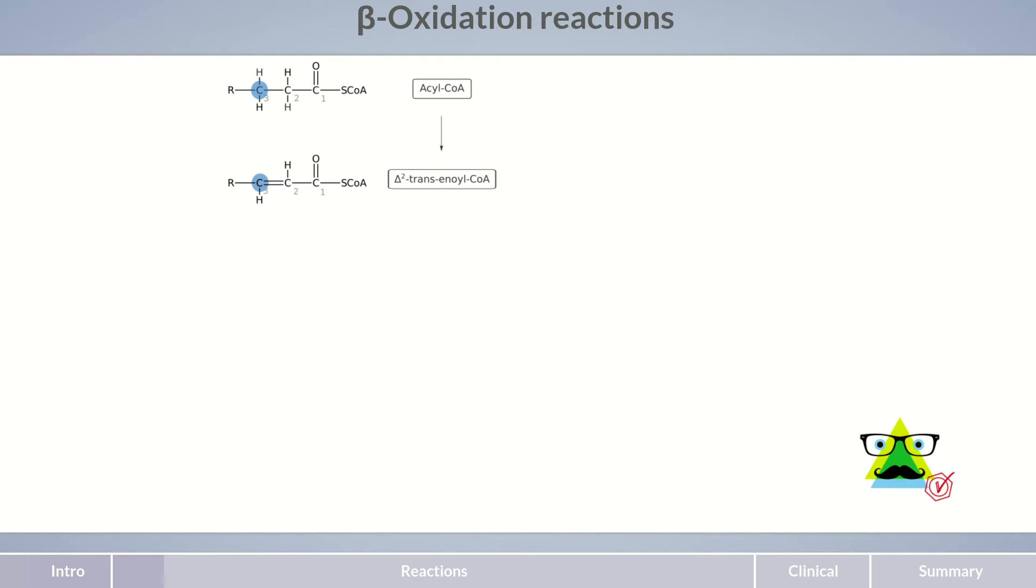It is accordingly called delta-2 transenoyl-CoA. The term trans refers to the position of the adjacent hydrogen atoms and indicates that they are on opposite sides of the double bond. You should take note that this double bond has a trans orientation, which will be important later on. The enzyme responsible for this reaction step is acyl-CoA dehydrogenase.